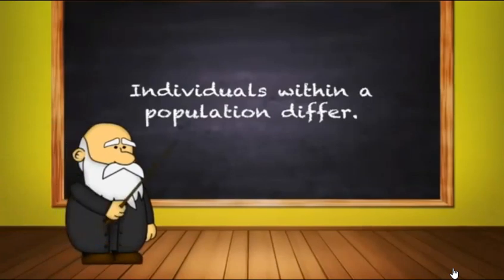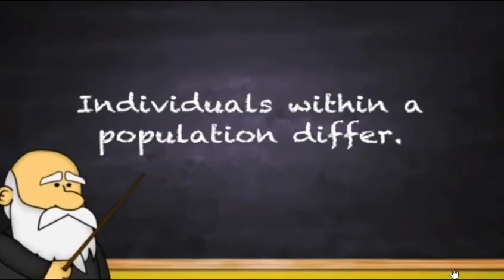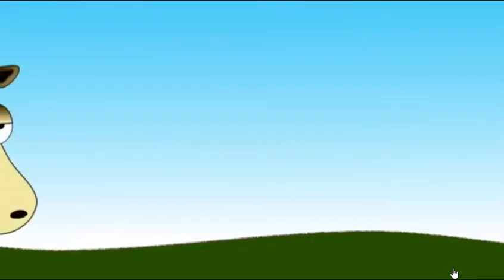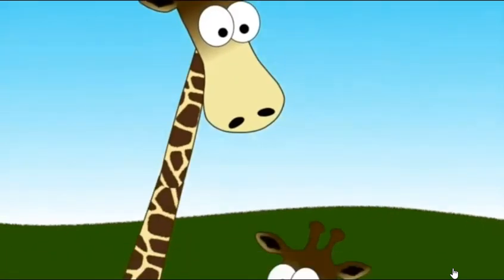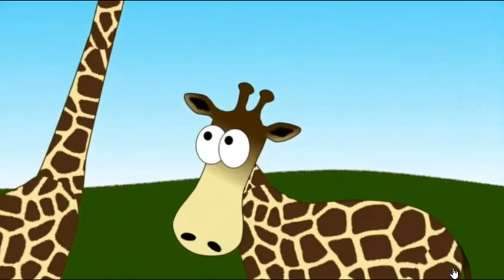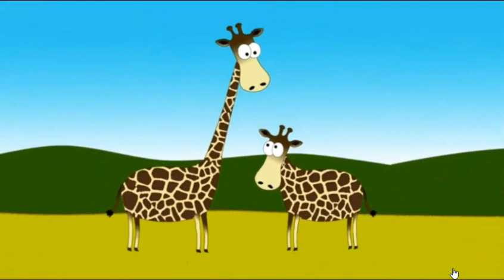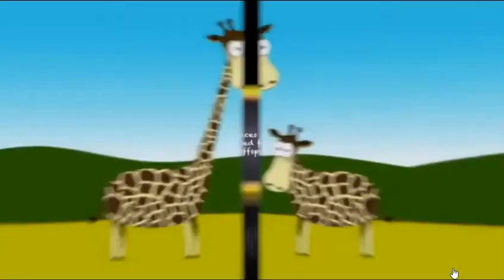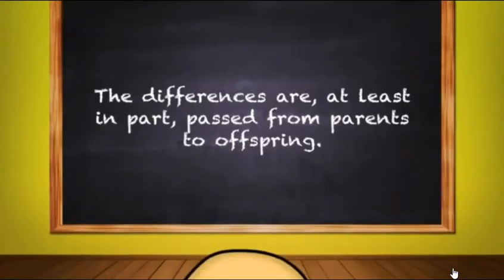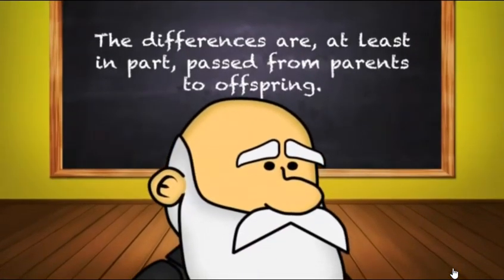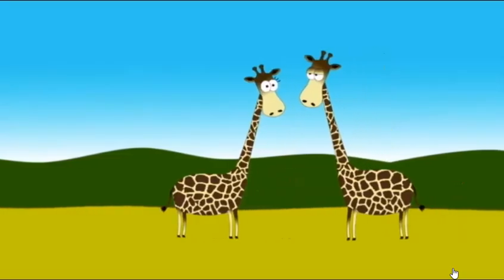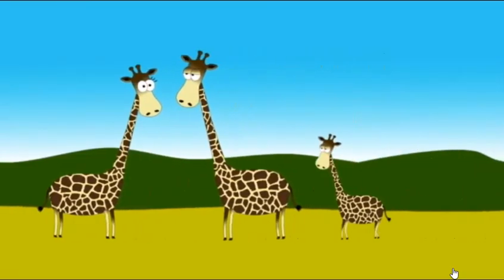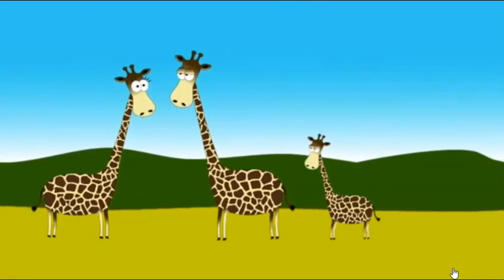Condition number one: individuals within a population differ. There are features that differ within populations of the same animal. In our case, the feature that varies between our giraffes is neck length — some giraffes were born with long necks, some were born with short necks. Condition number two: the differences are, at least in part, passed from parents to offspring. Darwin's descent with modification is the idea that offspring are fairly similar to their parents, with some genetic differences.